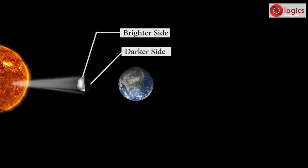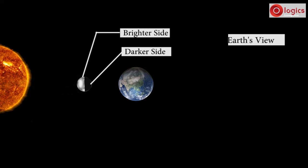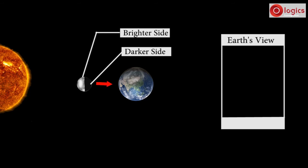Here, Moon is in between Sun and Earth. At this position, people on Earth see only the darker side of Moon. It appears as there is no Moon in the sky. This phase of Moon is known as New Moon, or Amavasya.